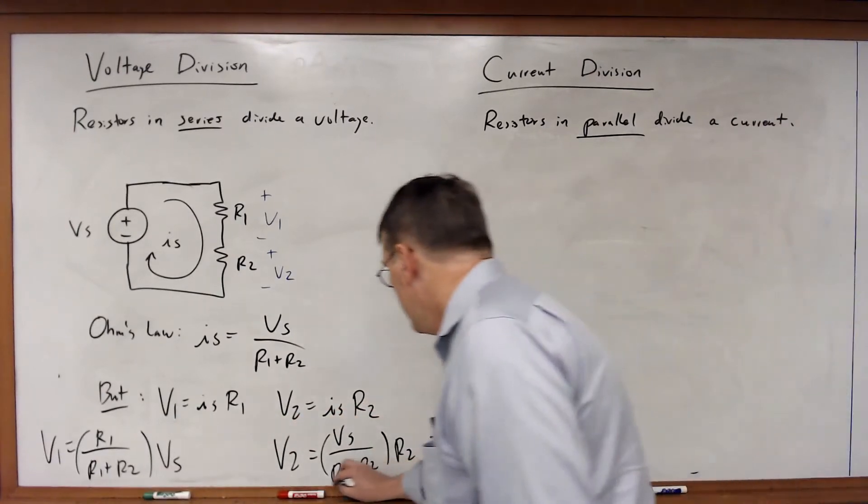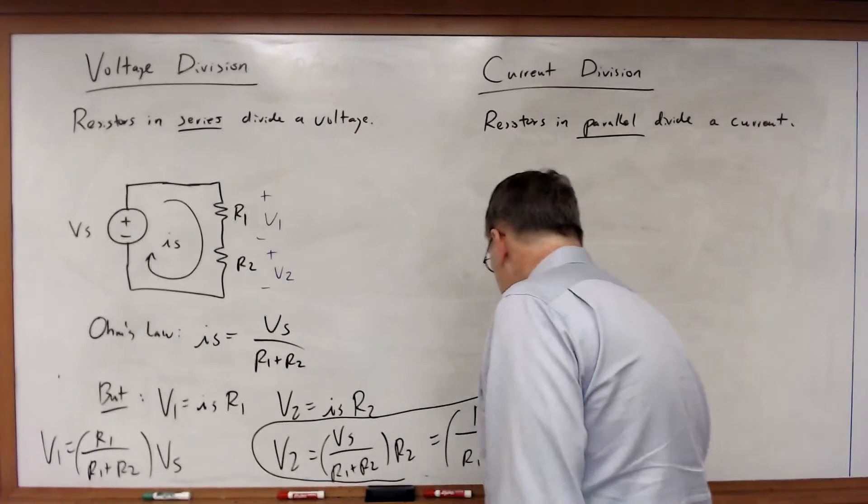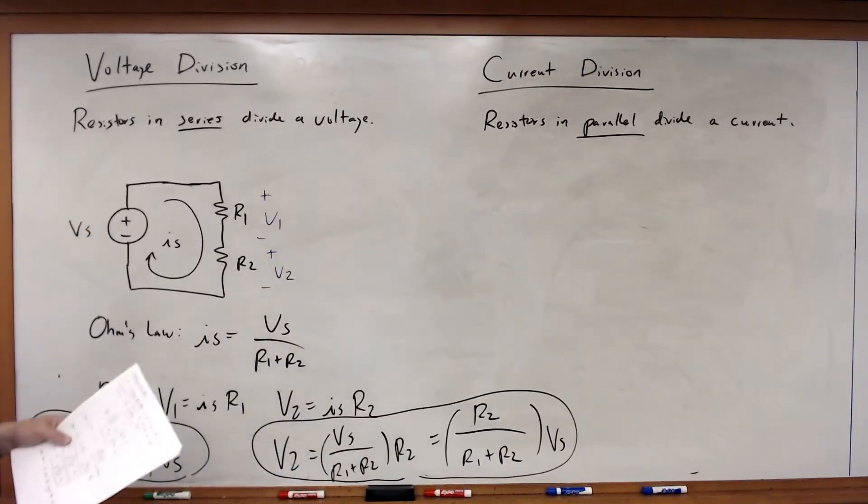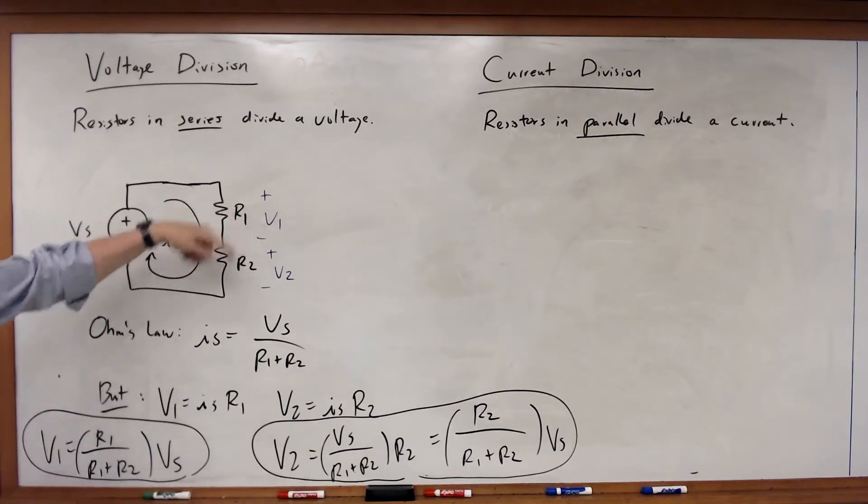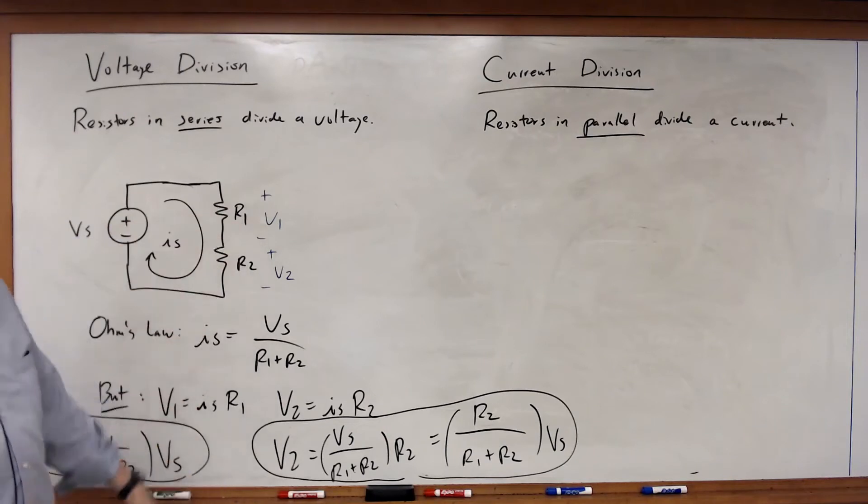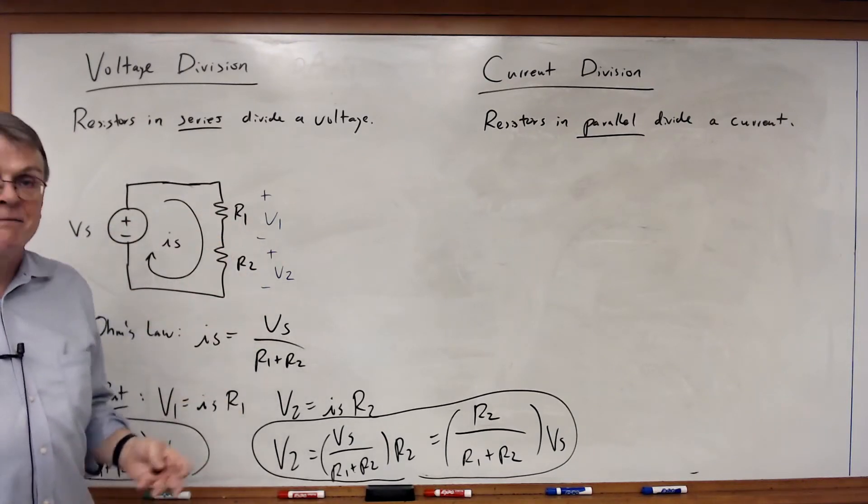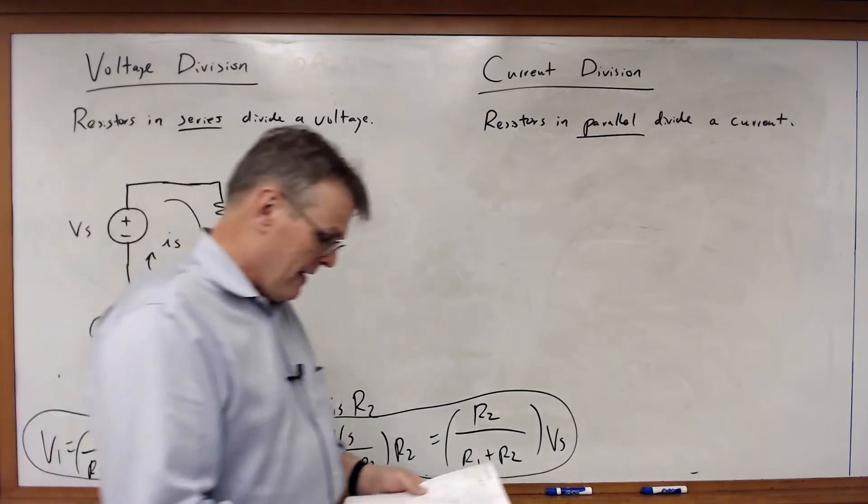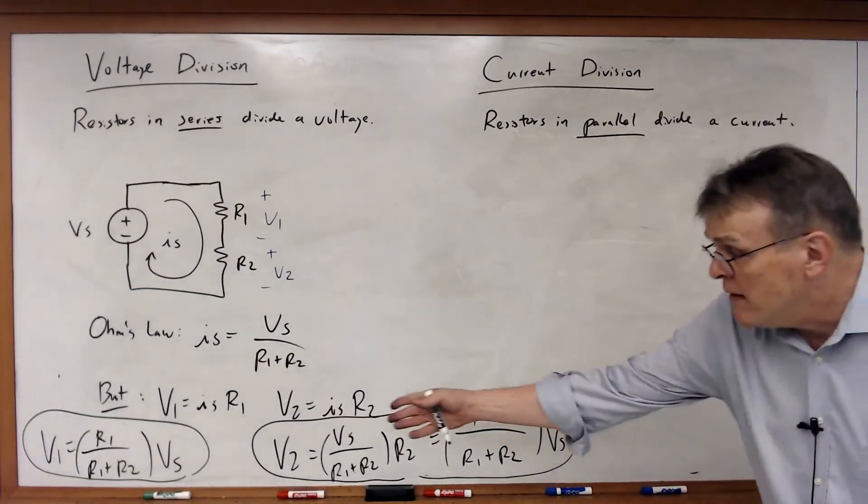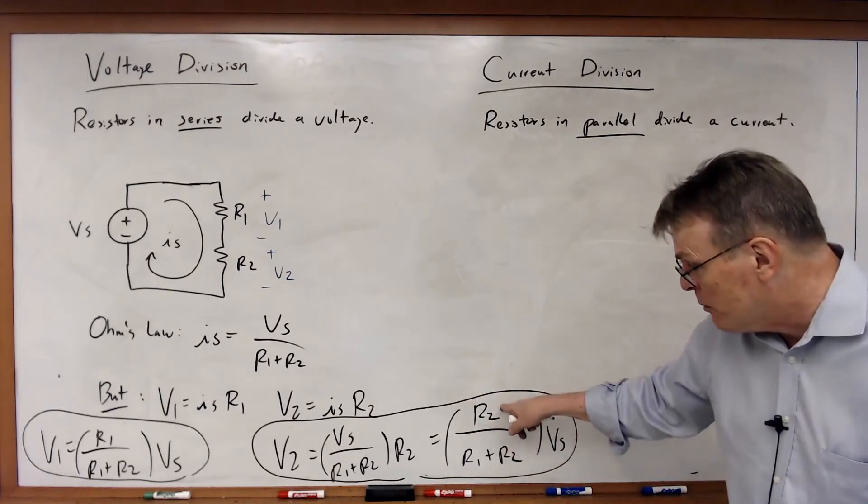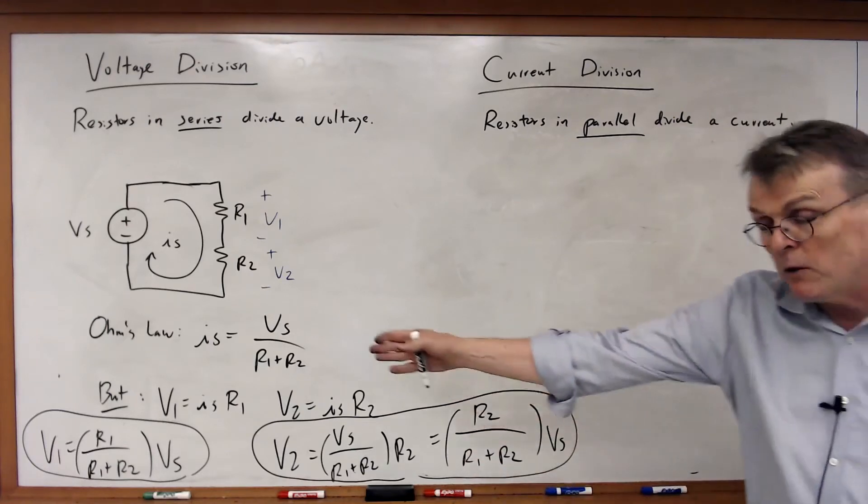So here's the principle of voltage division: the two resistors R1 and R2 divide the voltage between them. The input voltage is split into two pieces—that is voltage division in a nutshell, very simple. We note that V1 and V2 both have to be less than VS because the numerator is smaller than the denominator in both those equations.